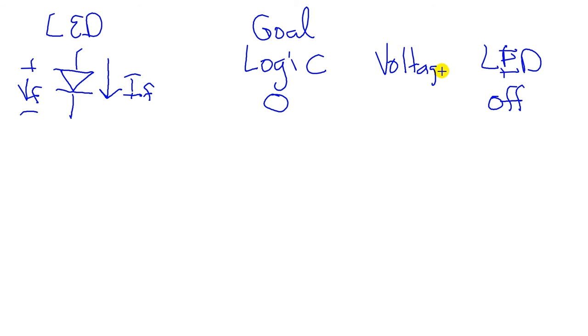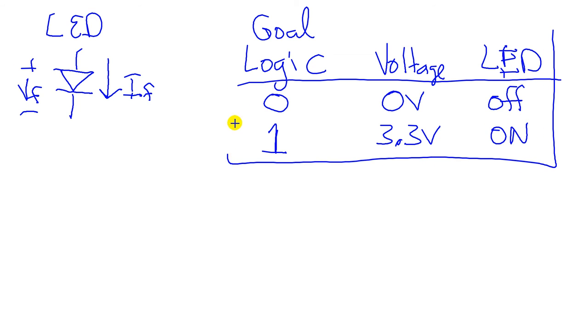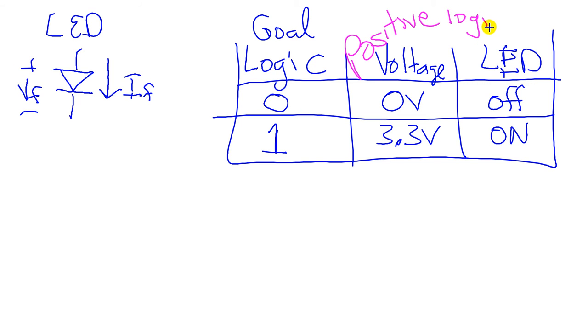And then the microcontroller will have a logic one, which will generate 3.3 volts, and that's going to generate the current on. This is called positive logic because the true has a voltage higher than the false. So the active state with the LED on is going to be a positive higher voltage.